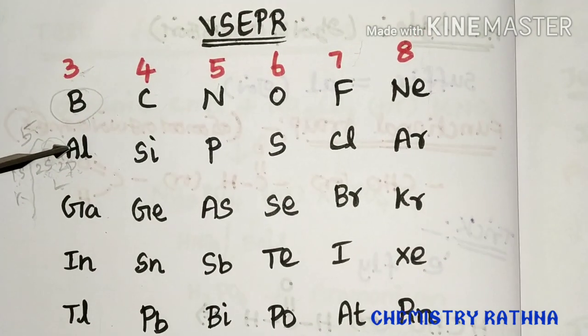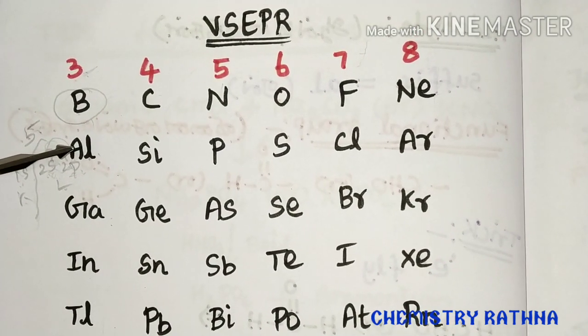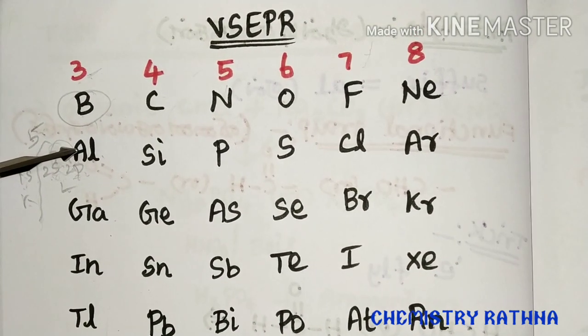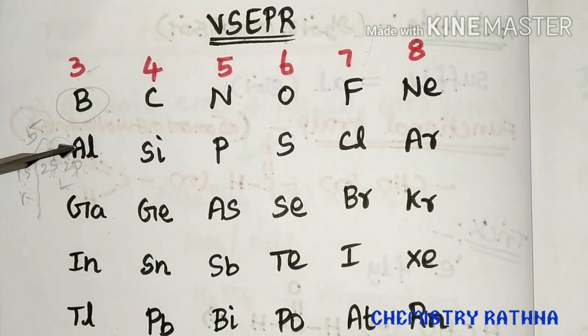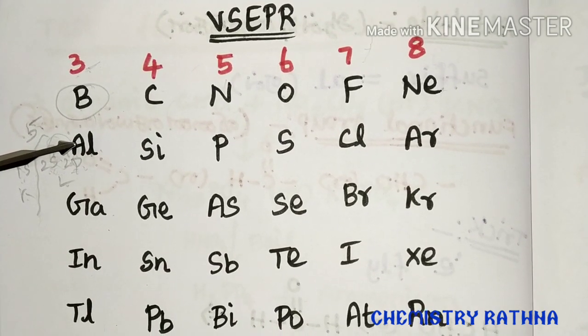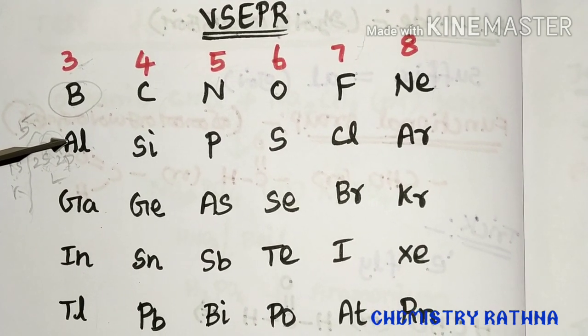Hello everyone. We are going to talk about the topic of VSEPR — Valence Shell Electron Pair Repulsion Theory. This is for NEET, JEE, Chemistry Complete Exam, and LA Exam.